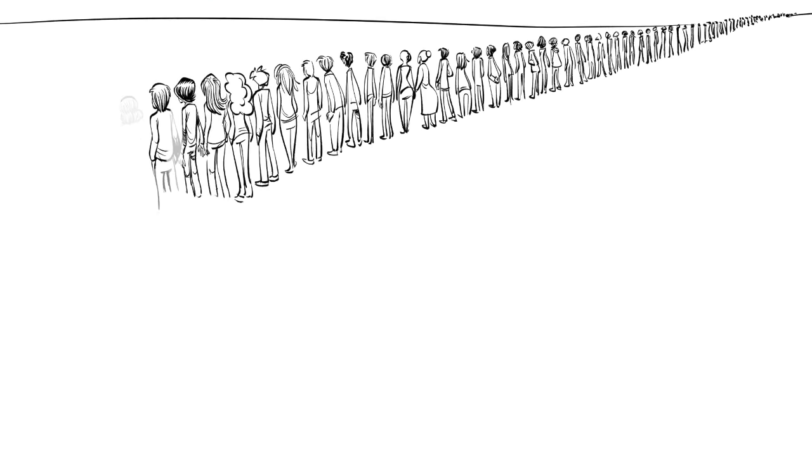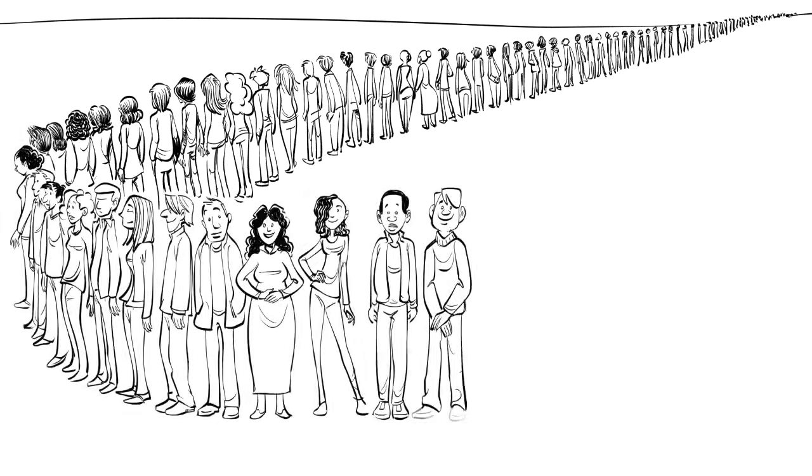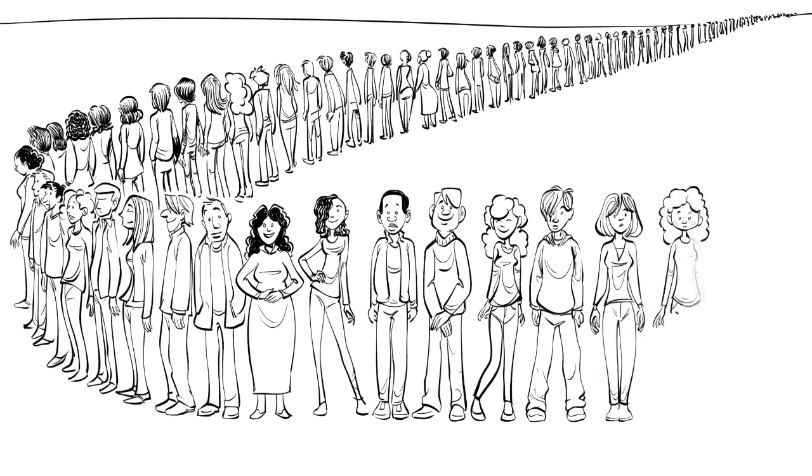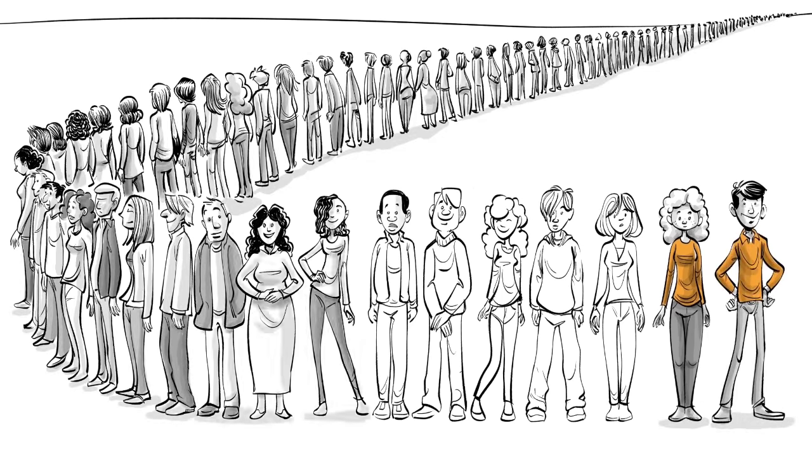When we examine a hundred random teenagers, we would find that while they all look different, their minds work in very similar ways. One or two, however, have minds that are atypical in a particular way. They could be diagnosed with autism.